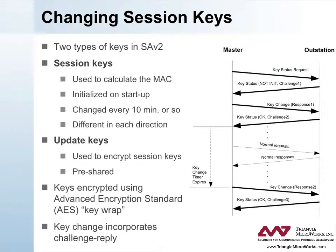There are two types of keys used in basic DNP3 secure authentication, as described in DNP3 SA-V2. Both must be at least 128 bits in length. The session key is the key used in the MAC calculations. A new session key is created every time two devices begin communicating, and is periodically changed by the master. In a typical real-time SCADA system acquiring data from outstations every two seconds, session keys should be changed on the order of every 10 to 15 minutes, perhaps an hour at the most.